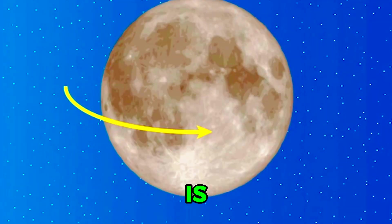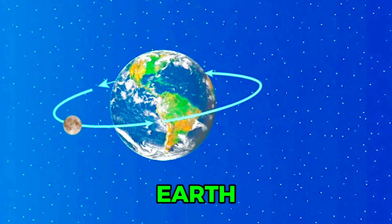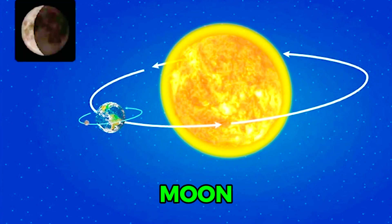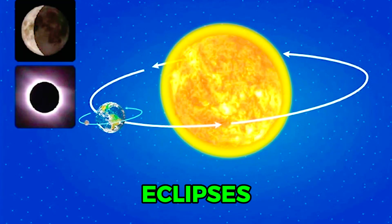The Moon is in motion as it rotates on its axis and revolves around the Earth. The changing relative positions of the Sun, Earth, and Moon cause Moon phases, eclipses, and tides.